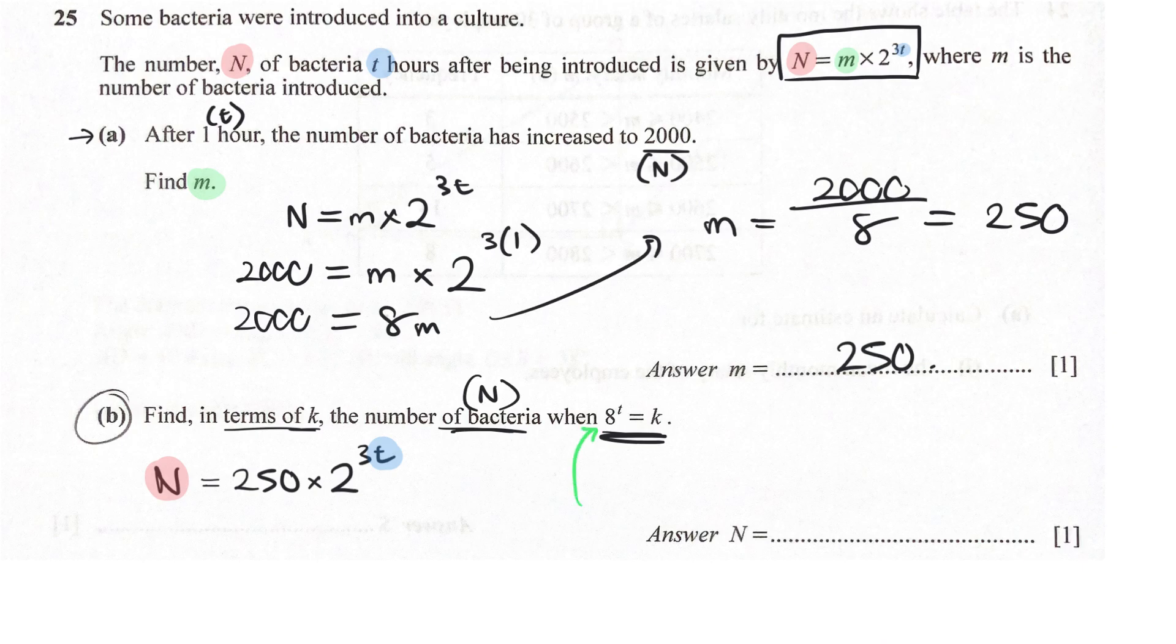Using indices, you know that 8 actually is 2 to the power of 3, right? So what's left behind is actually 8 to the power T, which equals 2 power 3T. Exactly this expression here.